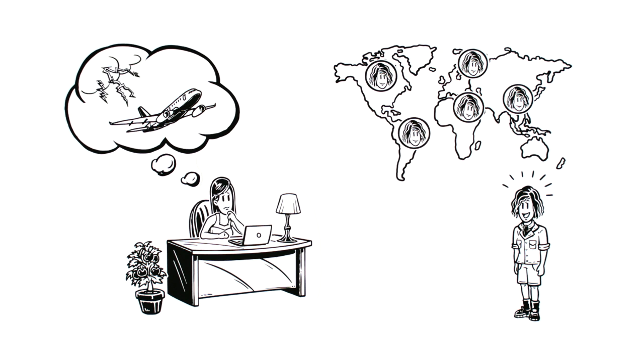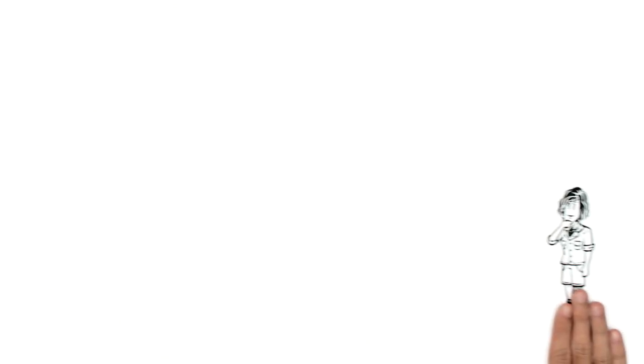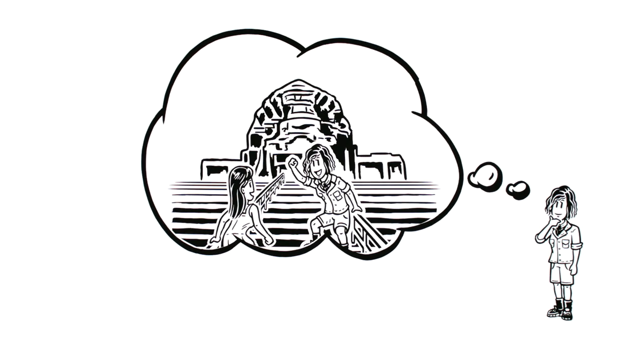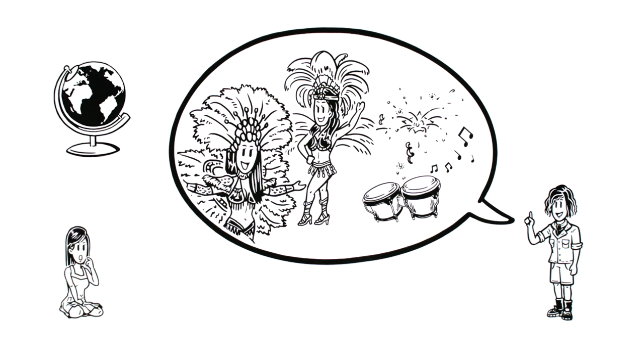However, Cat is hesitant to get on a plane, as she has never flown before. Robin wishes Cat could join her on an adventure. She decides to encourage her by mentioning some unusual festivals celebrated around the world.